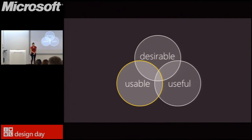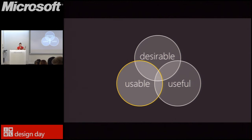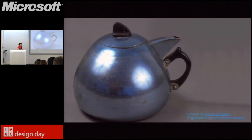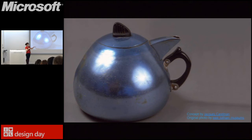Usable applications are performant — they load quickly and crash rarely. They're also very easy to intuit how to interact with; you don't need a manual to figure out how they work. The content presented is meaningful and representative of what users would expect. Here's an image demonstrating the opposite of usable — a cup that's kind of cool looking, but you don't know how to use it. Do you put your hands on the outside? If there's hot tea or coffee inside, you'd get burned. Really a bad user experience.